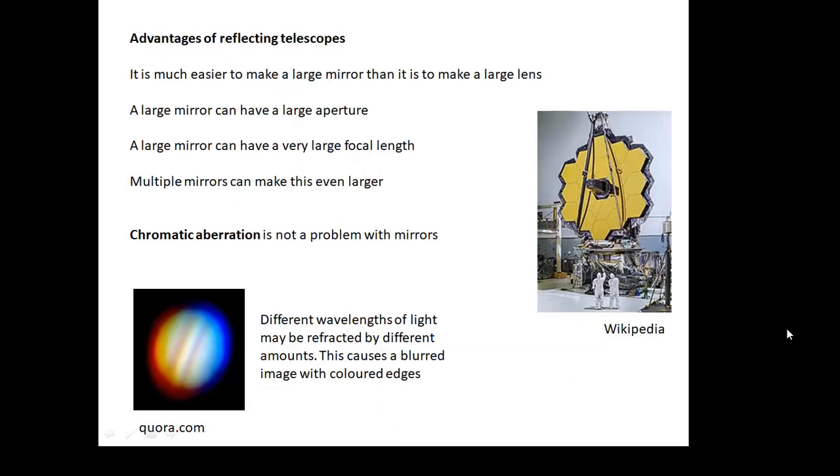Now, there are advantages of reflecting telescopes. It's much easier to make a big mirror than it is to make a big lens. If we're talking about the biggest telescopes in the world, and these have an objective element which is like several meters big, you can't make a lens that big, but you can make a mirror that big. A large mirror can have a very large aperture, so you're collecting lots of light. A large mirror can have a very large focal length. And also, what you can do is put several mirrors together to make an even bigger mirror. The diagram on the right there, that's the James Webb Telescope, which is going to be launched pretty soon. And that's made up of lots of different mirrors. It's segmented lots of different mirrors. And each one can be adjusted slightly to a hundredth of a millimeter to make sure that the image is perfect.